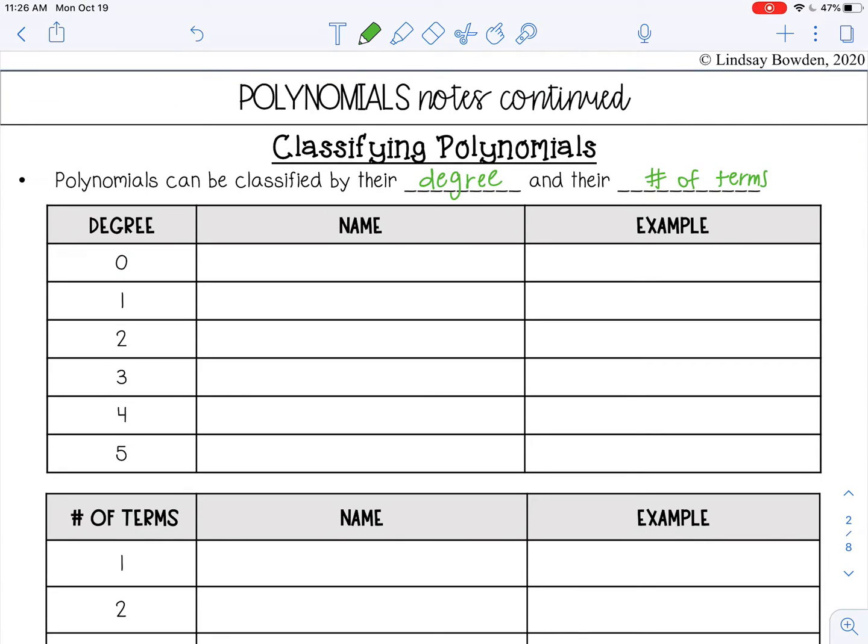So let's talk about degree first. So if a term has a degree of 0, or a polynomial has a degree of 0, that's called a constant. So for example, 5. All right, if a polynomial has a degree of 1, that's linear. So that would be like x, x to the first power.